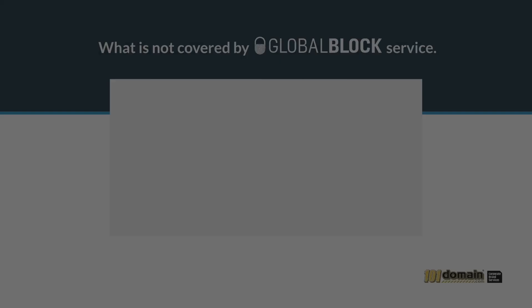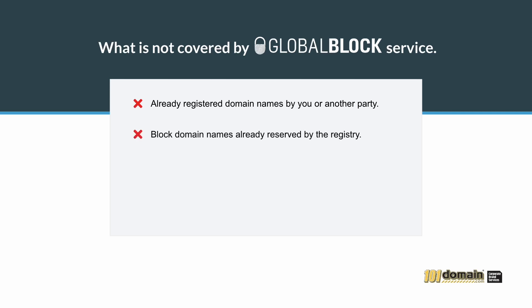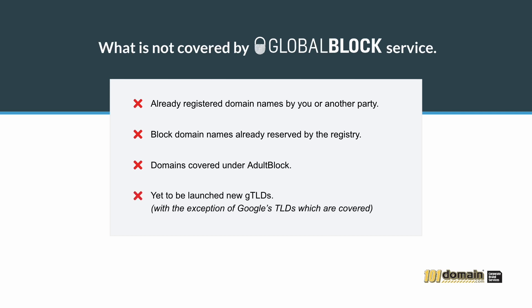What is not covered by the GlobalBlock service? Not covered by either GlobalBlock service are already registered domain names. When registered domains expire, they will automatically be pulled into your GlobalBlock service through the priority auto-catch feature. Domain names already reserved by the registry are not covered, which typically include geographical or culturally sensitive names. Domains covered under AdultBlock are not covered — these include .xxx, .sex, .porn, and .adult. Yet-to-be-launched TLDs are not covered, unless specifically defined within the GlobalBlock service, which is the case with Google Registry, who have agreed to automatically block domains and domain extensions they plan to launch in the future.